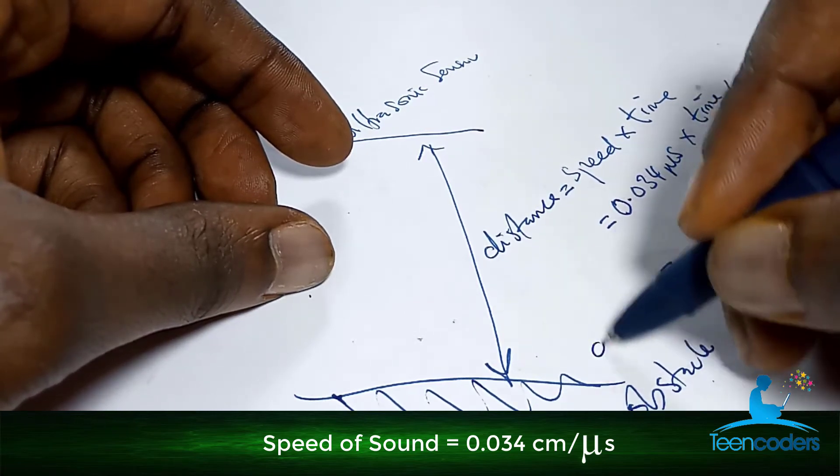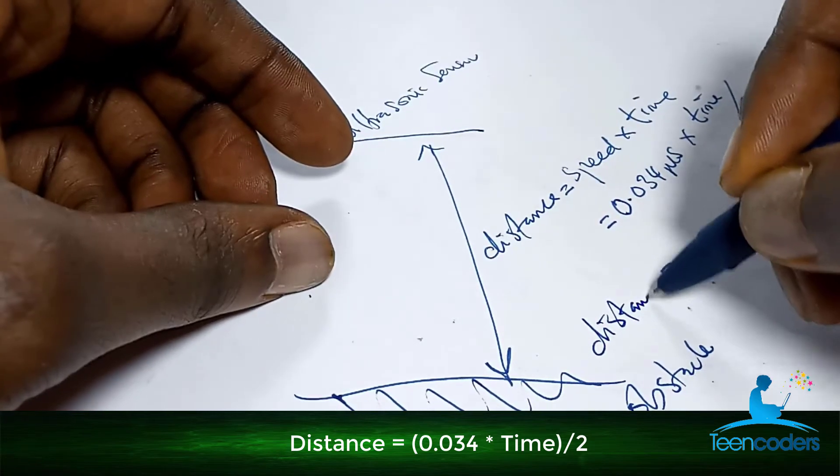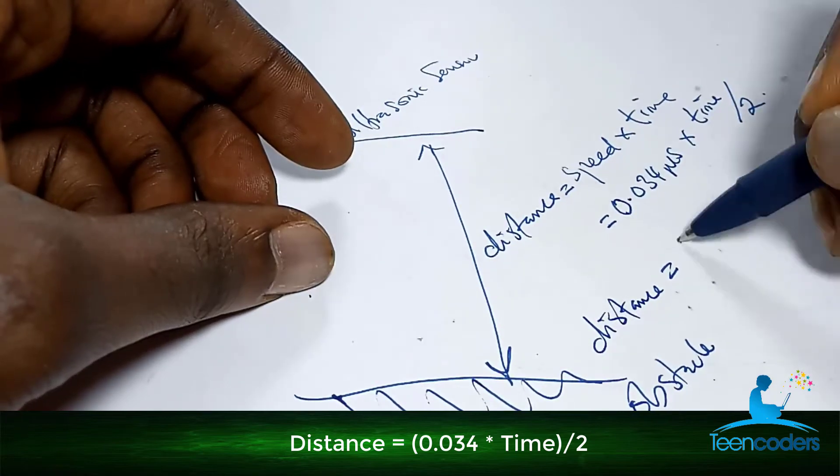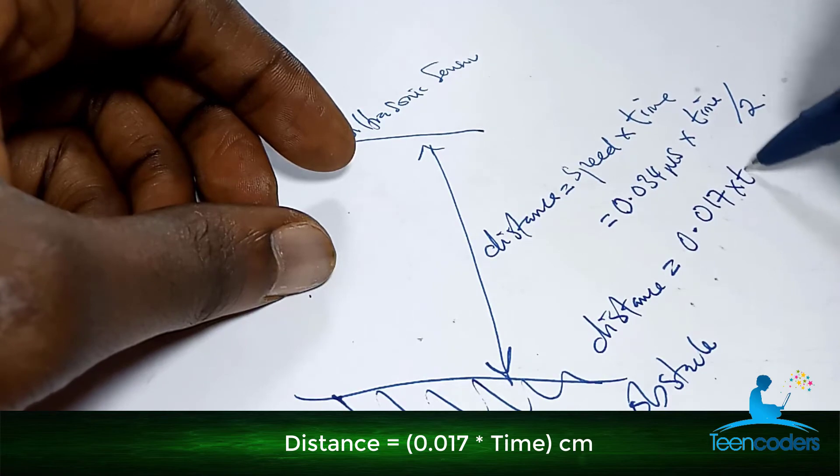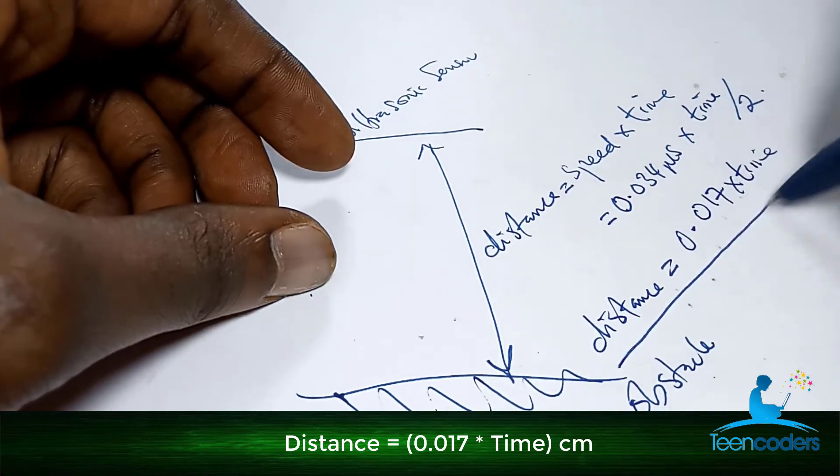That means indirectly, we can say, if I want to calculate the distance, the distance is equal to 0.017 times the time. This is the formula.